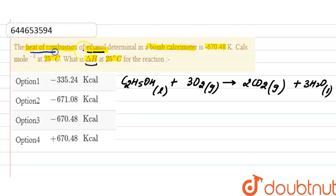Now, in the question, the heat of combustion in bomb calorimeter is given as -670.48 kilocalories per mole. In a bomb calorimeter, the volume is constant, and we calculate heat of combustion at constant volume, that is, the internal energy of the system.